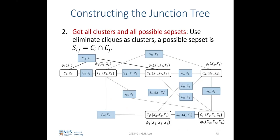After obtaining all clusters C1 through C6, we form a graph by assigning the clusters as nodes. We then find all possible subsets obtained by the intersection of every pair of clusters ci and cj. We exhaustively write down all possible subsets from all pairwise intersections in the graph, resulting in the graph of the undirected graphical model seen earlier.